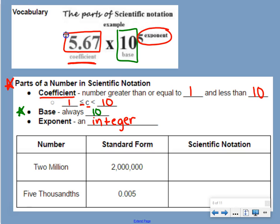If we look at our first example, we have 2 million. In standard form, it's written with a 2 and six zeros after it. To write it in scientific notation, we take the decimal point at the end of the number and move it until we make a number that's between 1 and 10. We have to move the decimal point all the way over until it is right after the 2, because then it's just the number 2.